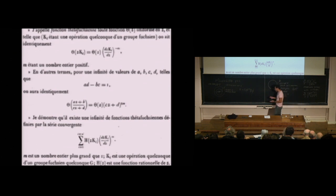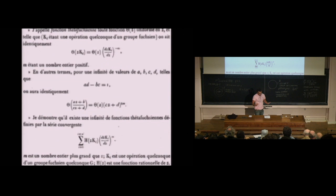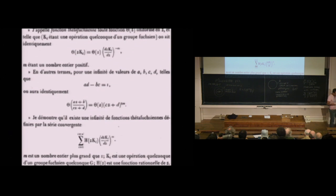Poincaré then wrote several articles on this. He later decided he had to understand the groups better in order to say more about the functions, so he wrote a paper called 'The Theory of Fuchsian Groups' — which he explicitly states is preparation for his next article about the functions. The key point is that Poincaré series was a way to construct holomorphic functions, or forms, that transform in the appropriate way — specifically, by this kind of power of the derivative.